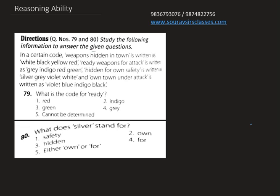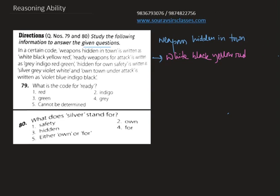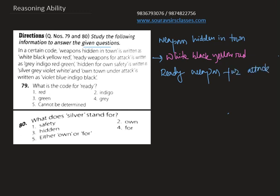Now let's see the question. We have to study the following information to answer the given question. In a certain code, 'weapons hidden in tongue' is written as 'white black yellow red.' The next coded statement is written in the code 'gray indigo red green.'